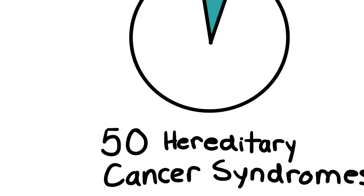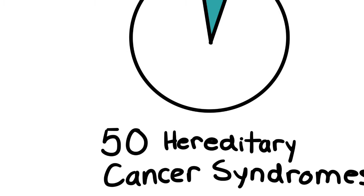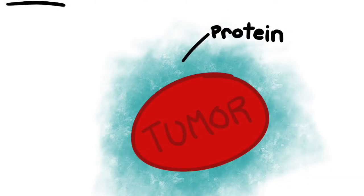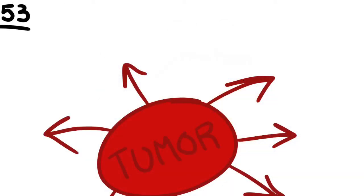Germline mutations play a huge role in 5-10% of cancers and are associated with 50 hereditary cancer syndromes. The most commonly mutated gene is TP53, which normally creates a protein that subdues the growth and development of tumors. The mutation prevents it from doing so.